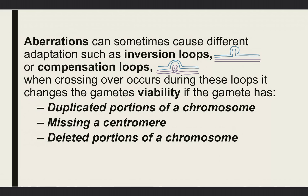When crossing over occurs during these loops, it changes the gamete's viabilities — if the gamete has a duplicated portion of a chromosome, if it's missing a centromere, or if it has a deleted portion of a chromosome.